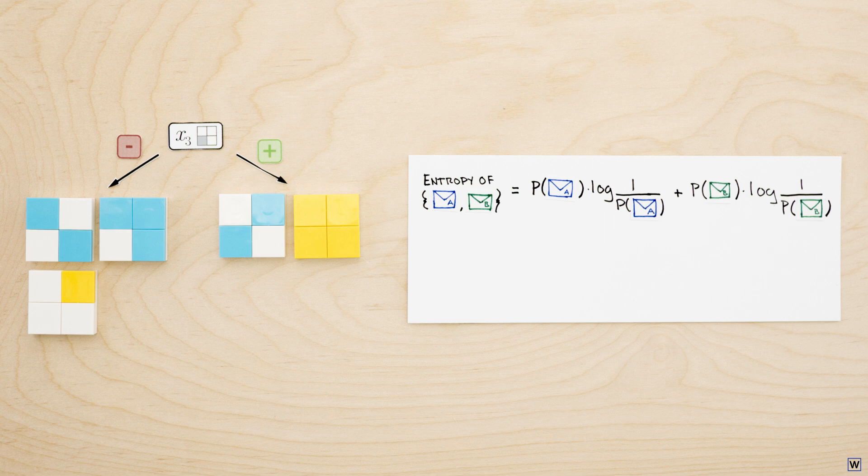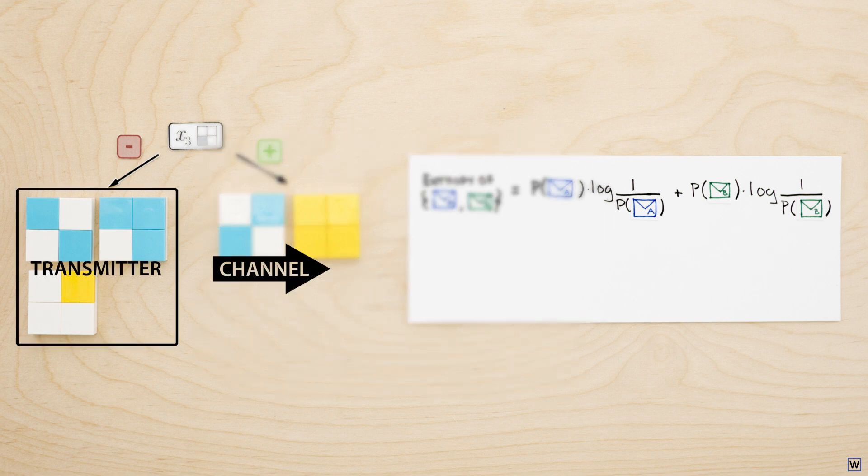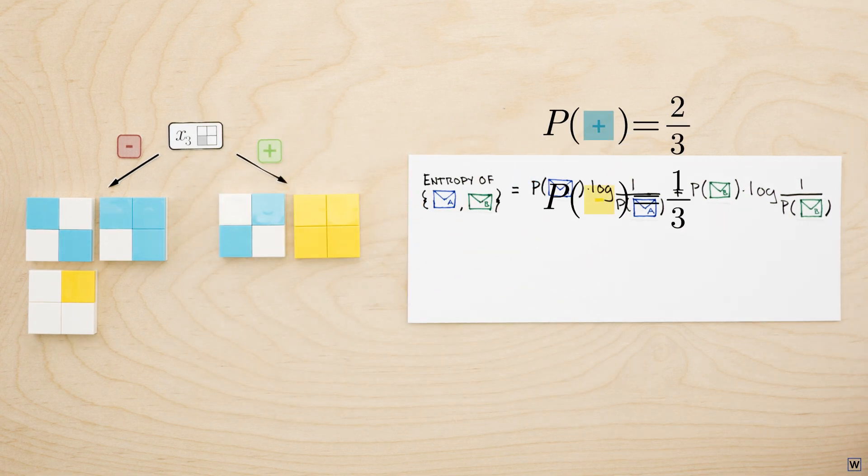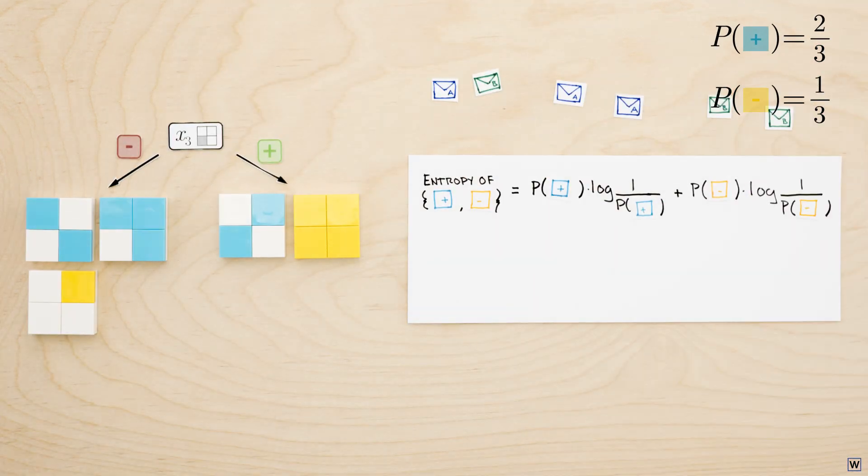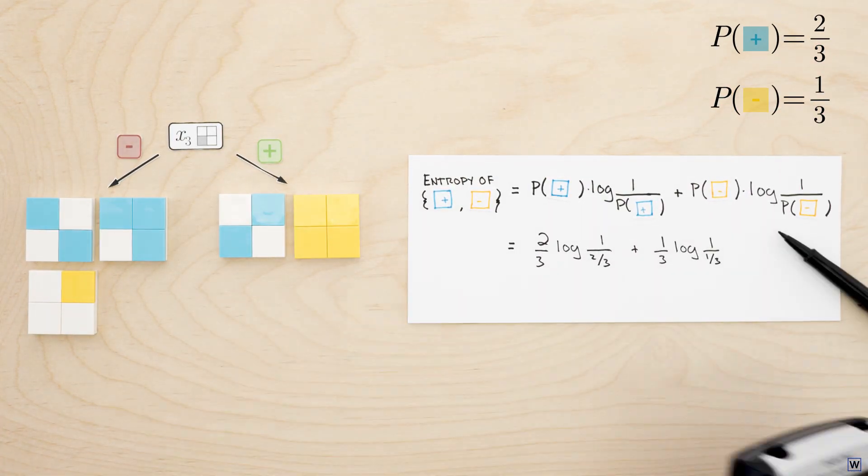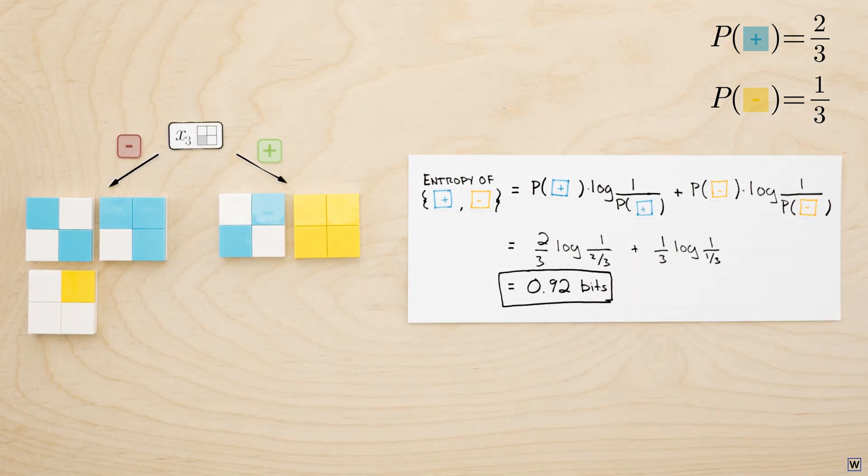To compute the average information content, the entropy of a given node, we treat our node as a transmitter capable of sending two messages, positive or negative. The probability of each message corresponds to the frequency of each class within our node. So for the left node of our x3 split, the probability of a positive message is 2 thirds, and the probability of a negative message is 1 third. We can now compute the entropy of this node by plugging into our formula, and obtain our first entropy measurement, 0.92 bits.